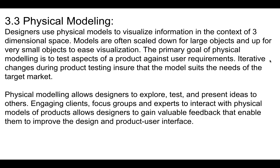Physical modeling is iterative, meaning that over time things change. Iterative changes during product testing ensure that the model suits the needs of the target market. An iteration is like a version — so you would have your first version, second version, third version, and so on. Physical modeling allows designers to explore, test, and present ideas to others.